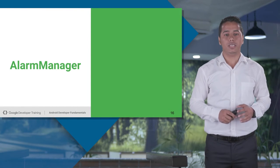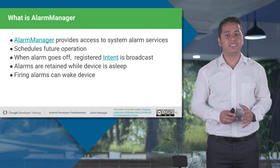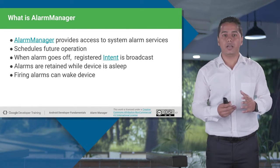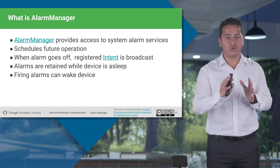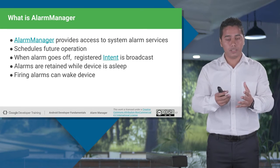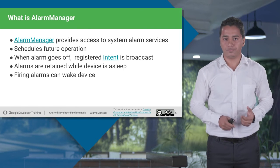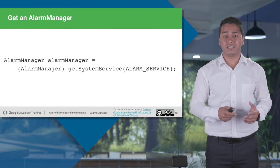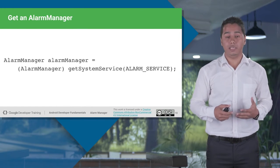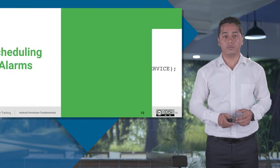Let's talk about the alarm manager class. What exactly is an alarm manager class? It provides the system alarm services to you, and it is used to schedule your future operations. Whenever your alarm goes off, there is a registered intent broadcast receiver which listens for that particular message and performs the action for you. To get access to the alarm manager object — as it's a system service — you need to call getSystemService with ALARM_SERVICE, and you will get the alarm manager object.